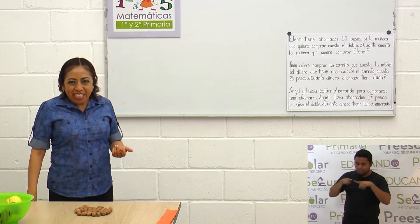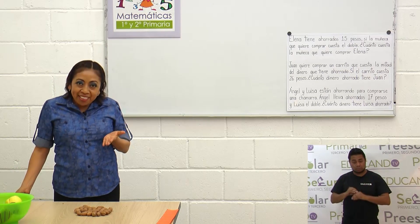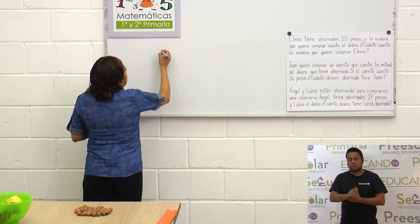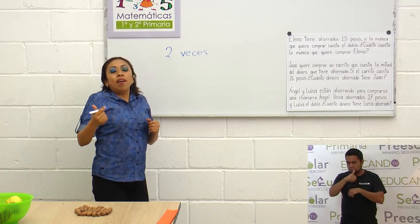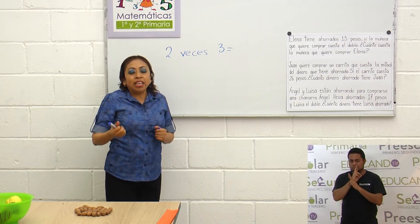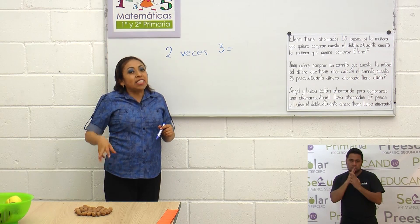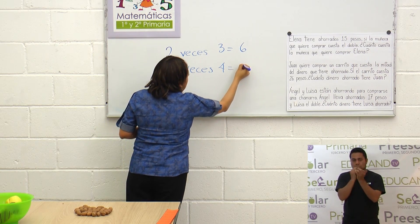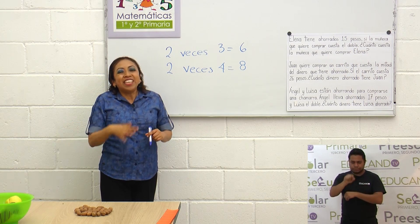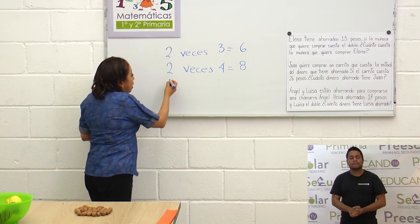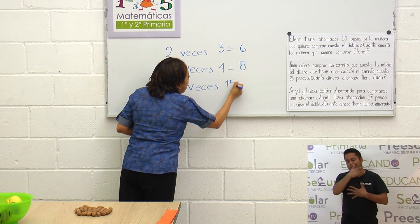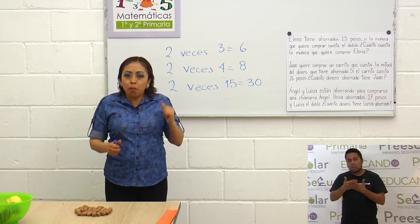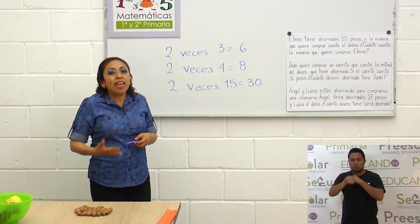Y te lo voy a presentar aquí en el pizarrón. Ya va quedando claro lo que es mitad y lo que es doble. Vamos a repasar lo que es doble. El doble es dos veces una cantidad. Por ejemplo, dos veces tres: dos veces tres es tres más tres igual a seis. Dos veces cuatro igual a ocho, porque vas sumando la misma cantidad. Y como en este caso, dos veces quince igual a treinta.